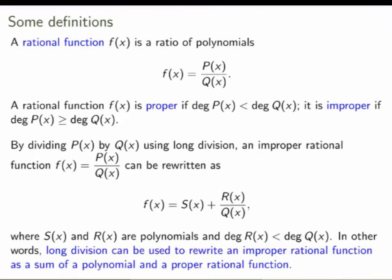The proper and improper rational functions are closely related. If you're given an arbitrary improper rational function, you can always divide the numerator by the denominator using long division for polynomials, and rewrite it as a sum of a polynomial and a proper rational function. Long division can always be used to do this, so in practice we only care about proper rational functions, because polynomials we know how to integrate.